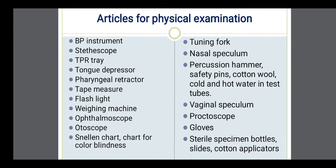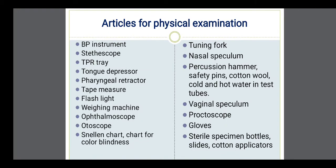One is the BP instrument, used to measure the blood pressure. Stethoscope is used for auscultation — to listen to body sounds, especially for examining the heart sounds, lung sounds, and bowel sounds. For this, a stethoscope is required. The next is the TPR tray.